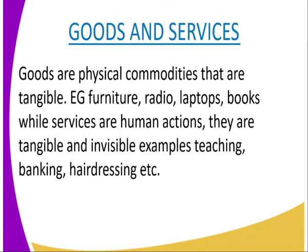We start by looking at what goods and services are. Goods are physical commodities that are tangible — anything that you can touch. You can change the ownership. That is what we refer to as goods. Examples include furniture, radio, laptops, books, bananas — these are all things that you can touch.